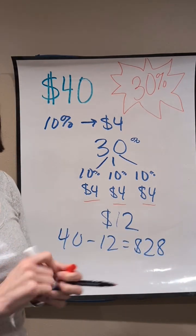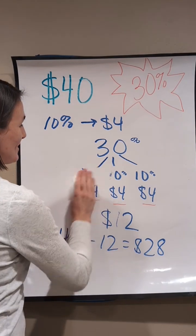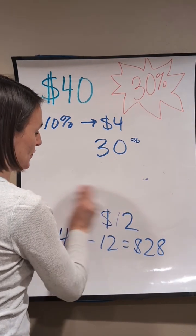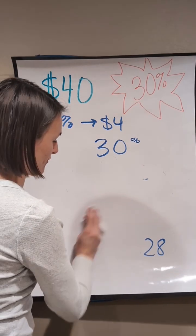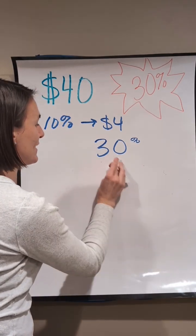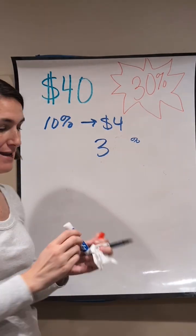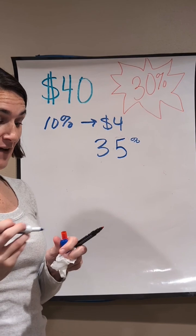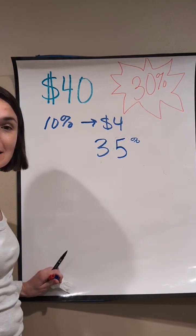Now, sometimes the percentages aren't just a multiple of 10, and then we have to think a little bit differently. We use the same start. I still think flexibly, but let's say instead of 30%, I have 35%. So if I have 35%, I still can think back to that 30.